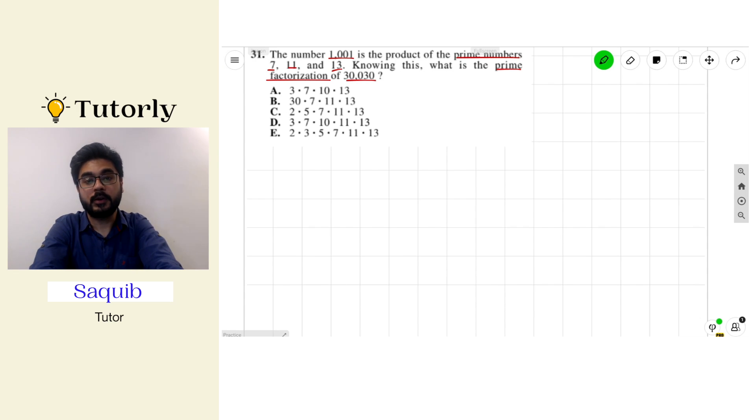So before we jump into the problem, let's define a few concepts. First, what are prime numbers? Well, a prime number is a number that can only be divided by 1 and itself. To give you an example, let's go ahead with 2. So 2 can only be divided by 1 or itself, which is 2, and therefore 2 is a prime number.